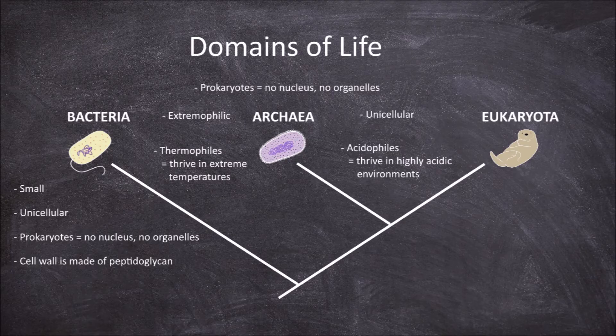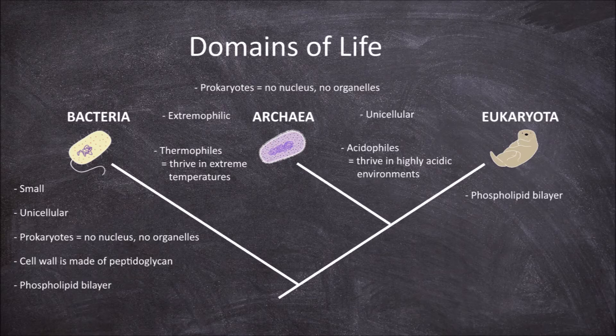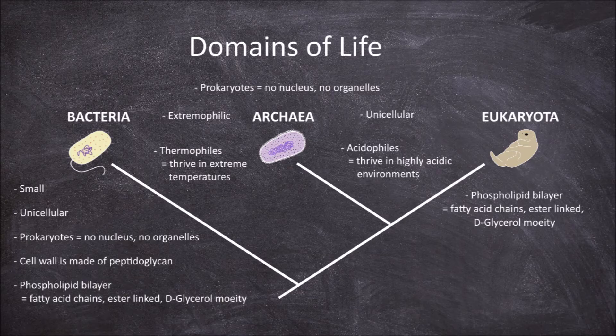Another feature that sets it apart from the other domains is the structure of their cell membranes. The cell membranes of bacteria and eukaryota consist of a phospholipid bilayer. The phospholipids in these two domains consist of a fatty acid chain, ester linkages and D-glycerol moiety attached to a phosphate group.